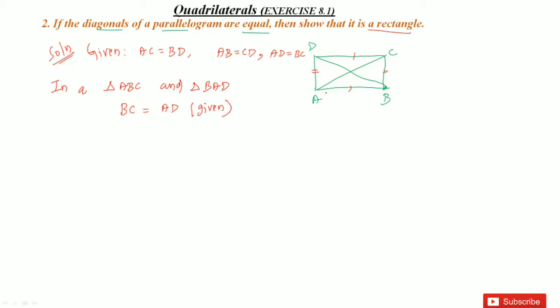And see, we have a common side for both triangles. ABC and BAD, we have common side AB. So that AB which is equal to AB, and this is common for both triangles. At the same time, in the given, they said diagonals are equal. The diagonals AC and BD will be equal. That is also I'm taking. So AC which is equal to BD. And this is also given by the textbook.